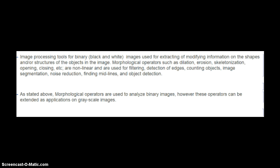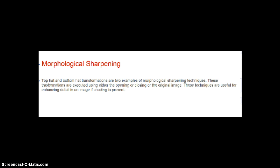These operators are used to analyze binary images but they can also be extended on grayscale images — they can be used as applications to analyze grayscale images. Now I am going to talk about morphological sharpening. The specific topic I am covering is the top hat and the bottom hat transformations, which are examples of morphological sharpening.